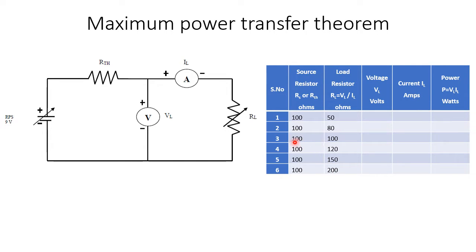At serial number 3, both source resistance and load resistance are 100 ohms. At this time, we should get the maximum power. We are going to measure the voltage, measure the current, fill in the table, and then calculate the power. So as per the maximum power transfer theorem, when the source resistance is 100 and the load resistance is 100, we should get the maximum power.